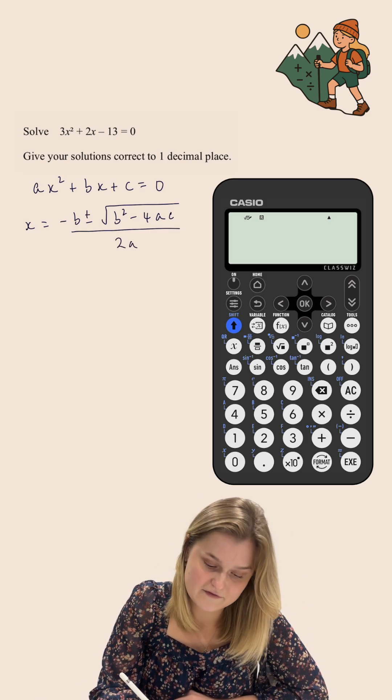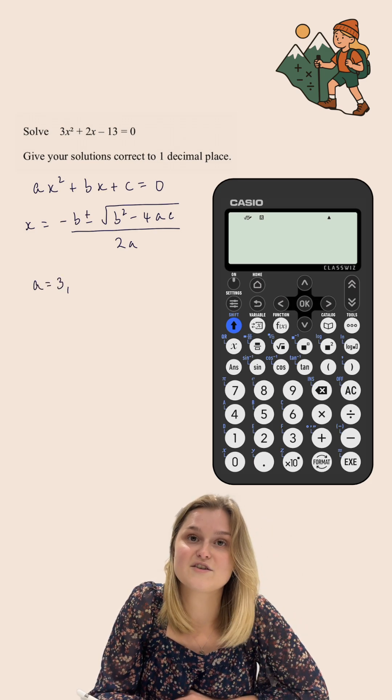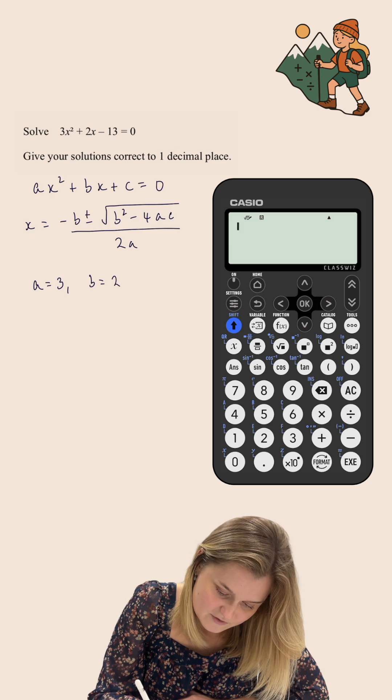In this quadratic equation, a is equal to 3, that's the coefficient of the x² term, b is equal to 2, that is the coefficient of the x term,